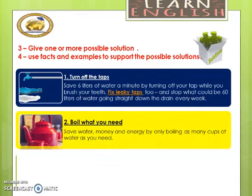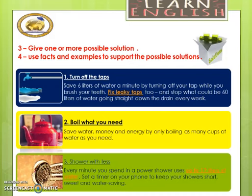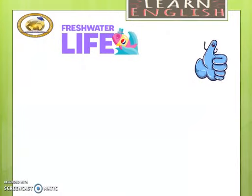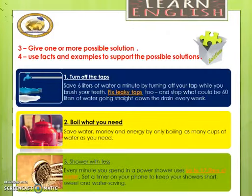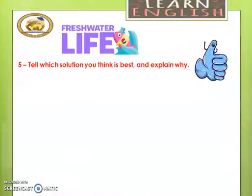Number two: boil only what you need. Save water, money, and energy by only boiling as many cups of water as you need. Also, shower with less — every minute you spend in a power shower uses up to 17 liters of water. Set a timer on your phone to keep your shower short, sweet, and water-saving. So, shower with less.